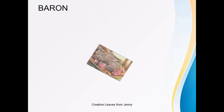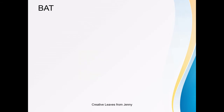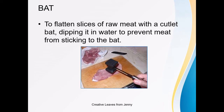Barrel: a double sirloin and rump of beef, also the saddle and two legs of lamb. Bat: to flatten slices of raw meat with a cutlet bat or steak hammer, dipping it in water to prevent the meat from sticking to the bat.